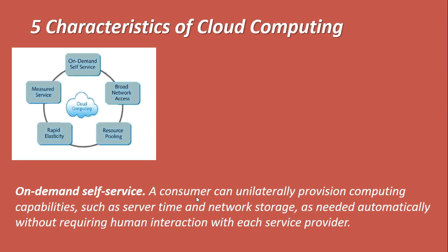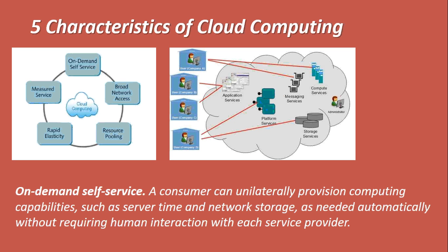Whenever any organization or individual needs a service, they should just be able to get it — that is the meaning of on-demand self-service. User A should be able to get compute or messaging services; user B should be able to get application, platform, or storage services. All of these should be available to cloud users without any interaction from the service provider. You should not have to wait for the provider to provision the service.